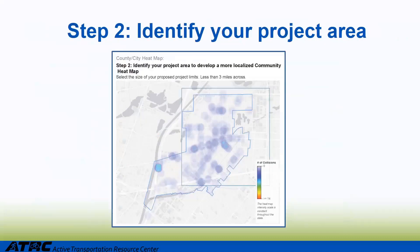In step two, the user identifies where their project location is within the jurisdiction. You will see the jurisdictional boundaries, and then the user clicks in the approximate center of their proposed project. Another thing to note on this jurisdiction-wide map is the intensity scale of the crashes. For this particular jurisdiction, there is no red intensity or really high crash concentrations, because the intensity scale is shown at a statewide level — meaning there are other locations within the state of California that have higher crash intensities.